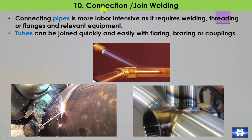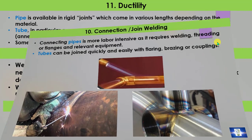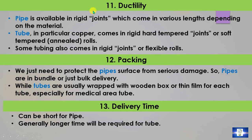Point 10: Connection or joint welding. Connecting pipes is more labor intensive as it requires welding, threading, or flanges. Tubes can be joined quickly and easily with flaring, threading, or couplings. Point 11: Ductility. Pipes are available in rigid joints which come in various lengths depending on the material. For tubes, copper in particular comes in rigid hard-tempered joints or soft-tempered rolls; some tubing also comes in rigid joints or flexible rolls.